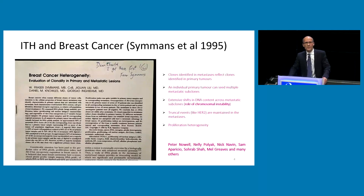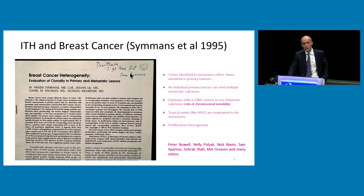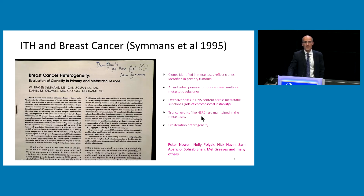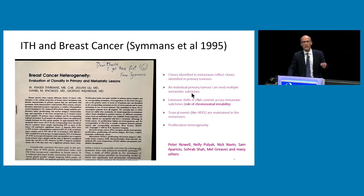To coin the common phrase, we were standing on shoulders of giants. Many people before us had shown, in elegant work typified by Fraser Simmons' work in 1995, the branched evolution trajectories of tumors, as Peter Knoll, Nellie Pollyack, Nick Navin, and others had also shown. Fraser showed that clones identified in metastases reflect clones identified in primary tumors, an individual primary tumor can seed multiple metastatic clones, and there are extensive shifts in DNA content across metastatic subclones, alluding to the important role of chromosomal instability. Truncal events like HER2 amplification are maintained in metastasis, and there's extensive proliferation heterogeneity. The tools we have nowadays allow us to elucidate this process in high definition.